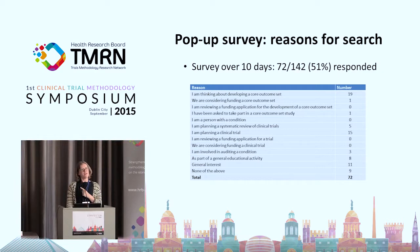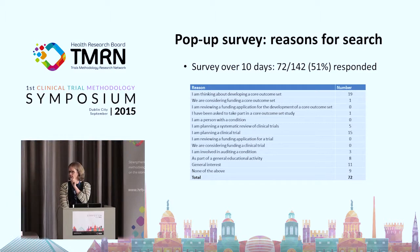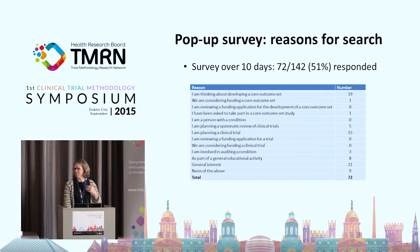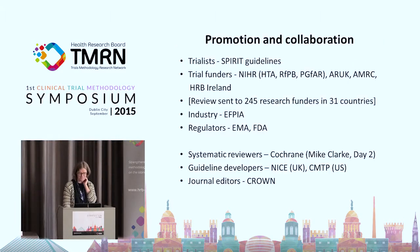There were nine people who flummoxed us — we thought we'd done a really good job of finding all the possible reasons to search the Comet database, but there were nine people who selected 'none of the above.' We couldn't go back to them to ask what that was. So if any of you happen to be in that nine, or if you can think of anything not on this list, we'd be really pleased to hear.